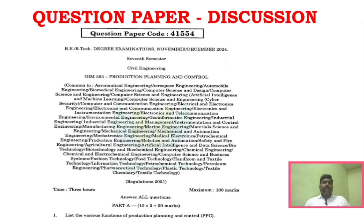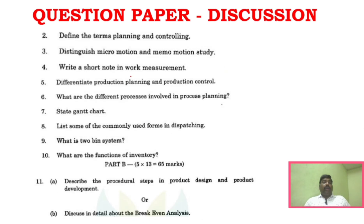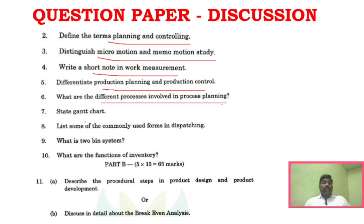Now for the question paper discussion, looking at the November/December 2024 question paper: Part A includes various functions of production planning and control, planning and controlling definitions, micro motion and memo motion study short notes, work measurement, production planning and production control, different processes in production planning, Gantt charts, commonly used forms in dispatching, two-bin system, and functions of inventory.